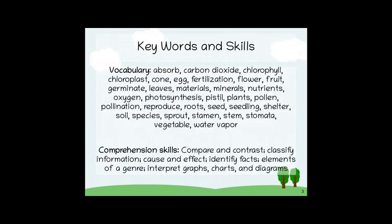We're going to learn a lot of key words and skills. Some of the vocabulary that we'll learn are words like chlorophyll, chloroplast. We'll learn the process of photosynthesis. We'll learn parts of a plant such as pistil, pollen, stamen, sprout, and roots. And at the end of this lesson, there'll be a glossary so you can review the definitions of each vocabulary word.